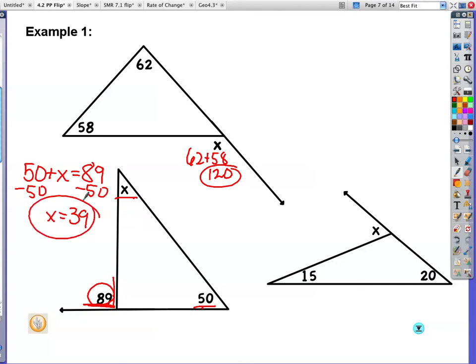Beautiful. Over here, I have my exterior angle. These two remote interior angles total or add up to be my exterior angle. So 20 plus 15 is 35. 35 degrees.